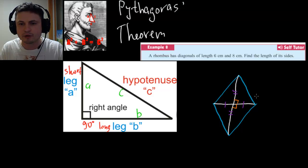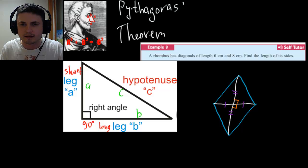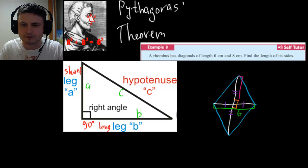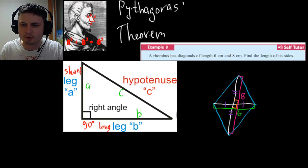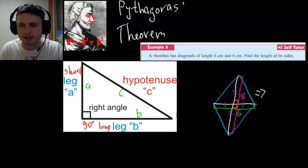So basically now we have four different right triangles. And what it says here is that the shorter diagonal is six centimeters. So this whole thing is six, and then this whole thing is eight. And what we need to do is find the length of its sides. Now all of the sides of rhombus are equal, meaning that we just need to find one length, one side.